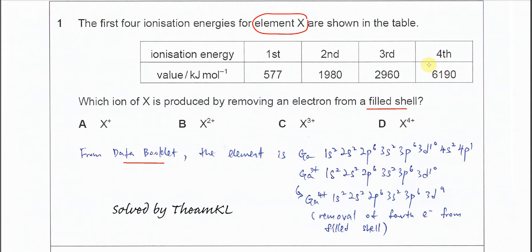you can actually identify this element. These four ionization energies are from gallium. Gallium's electron configuration is this one.